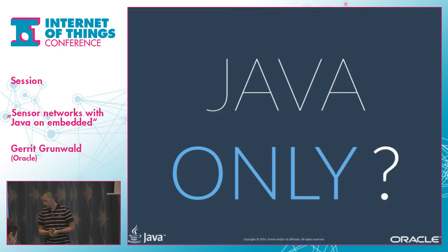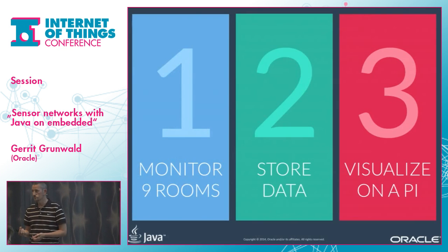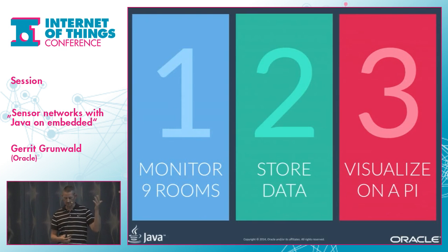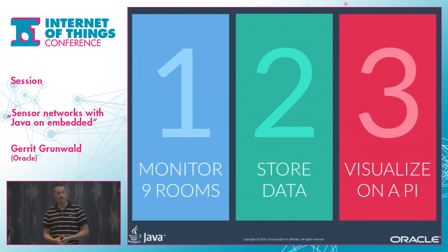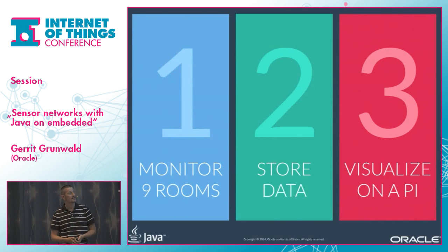My main concern was: can I do most of the stuff in Java? So I created a little to-do list: first, figure out how to monitor nine rooms; then how to store the data and where; and how to visualize the stuff on the Raspberry Pi. That was my main constraint. This session was originally made for one and a half hours, so I skipped the fourth part about mobile clients — you will only get the three.